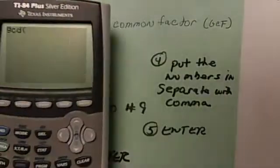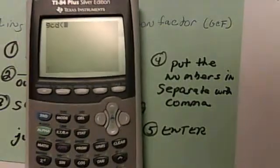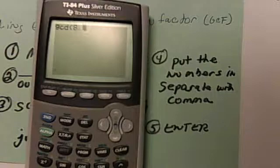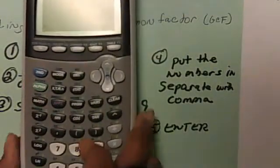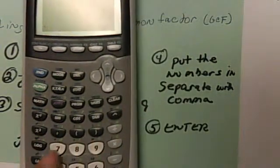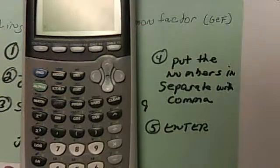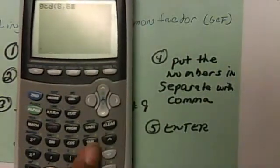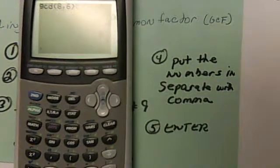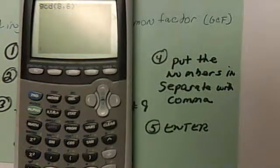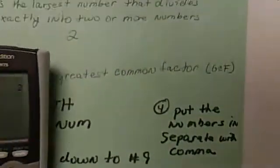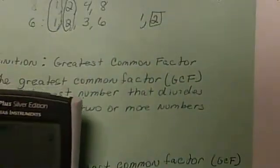Once you select it, this is when you're going to put your commas between the two numbers that we did. We did 8 comma—the comma is on top of the 7—8 comma 6. You can close it up. Then you can hit enter, and then it's going to give you what we got when we worked it out, which is 2.